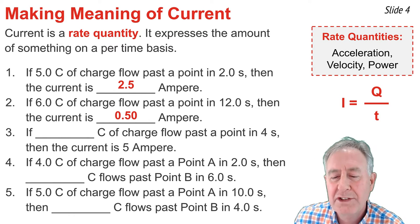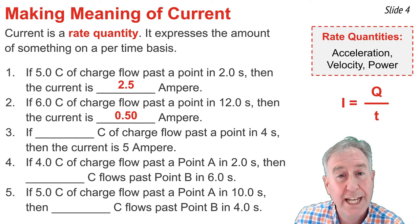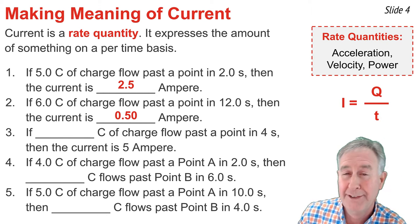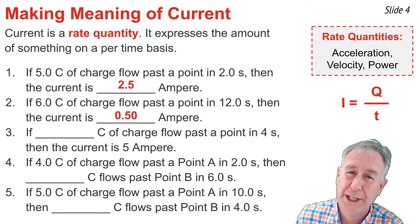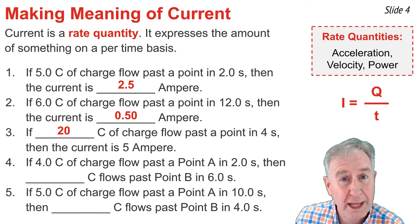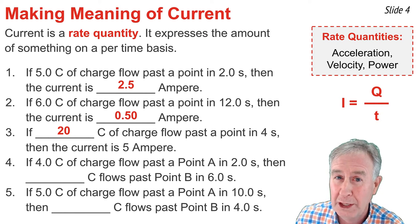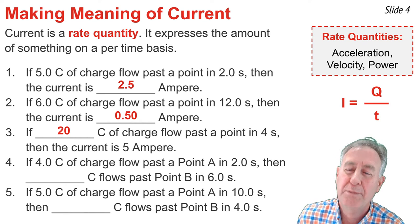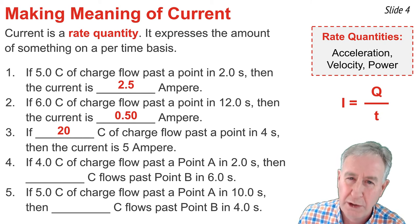The third question is quite different. It says if blank coulombs of charge flow past a point in four seconds, then the current is 5 amperes. I know the I is 5, and that tells me the numerator must be 5 times the denominator. The denominator is 4 seconds, so the numerator must be 20 coulombs. In the fourth question, four coulombs of charge flow past point A in two seconds. That means the current at point A is 2.0 amperes, and also the current at point B must be 2.0 amperes. So if the time is 6 seconds, the coulombs is 12 coulombs.